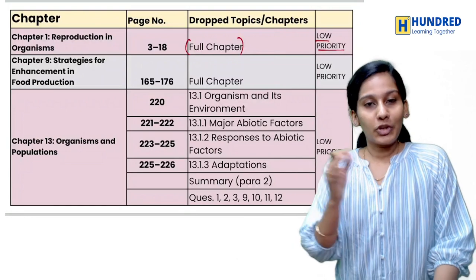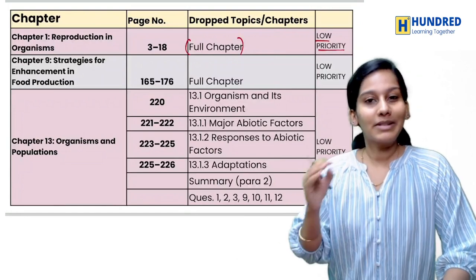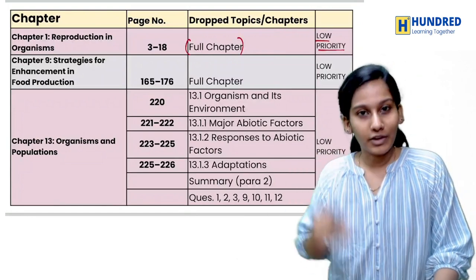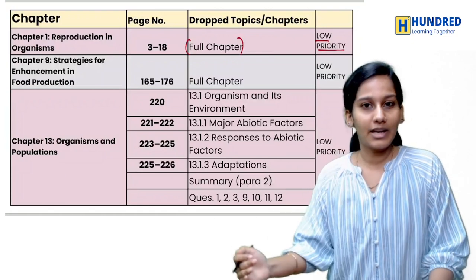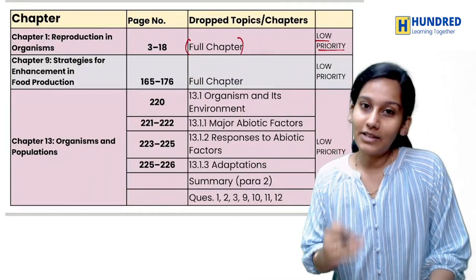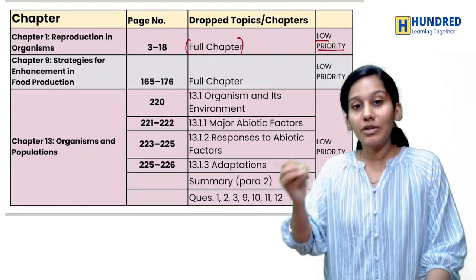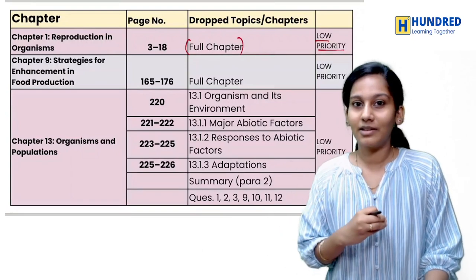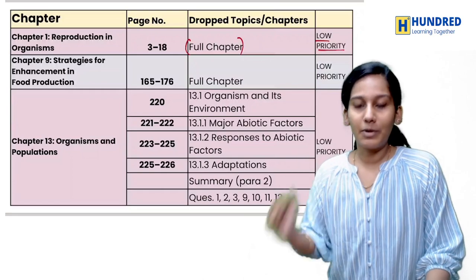Now, starting with the remaining chapters. For the Class 12 portion, we can start with Sexual Reproduction in Flowering Plants. When we start these low priority chapters, we can learn them separately after completing the main chapters. You will start with the low priority chapters after finishing the important ones.